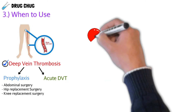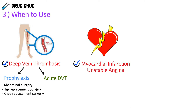We could also see enoxaparin used if a patient has had a myocardial infarction (heart attack) or unstable angina (severe chest pain). Here we give it as prophylaxis to prevent ischemic complications — meaning blood isn't flowing to the tissues — and since enoxaparin is an anticoagulant, we're thinning the blood to allow it to flow more easily to those areas.